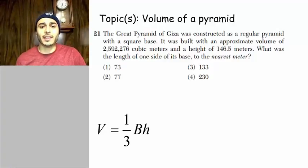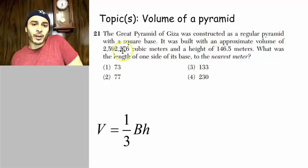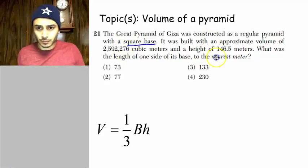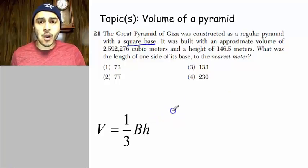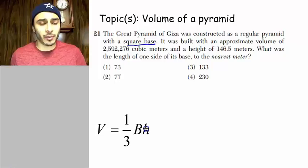Number 21, the Great Pyramid of Giza was constructed as a regular pyramid with a square base. All right, so this is the formula for the volume of a pyramid.